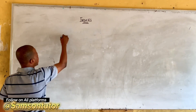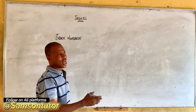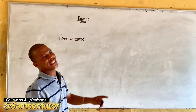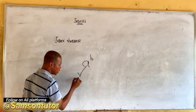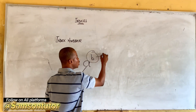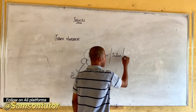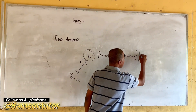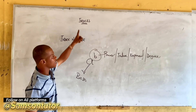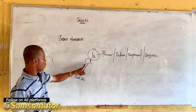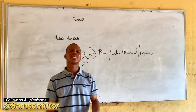Index numbers are numbers which consist of both powers and a base. When we have a raised to power b, 'a' is called the base while 'b' is called the power. The other names for power are index, exponent, or degree. So a raised to power b is called an index number, and indices is a mathematical expression of index numbers.